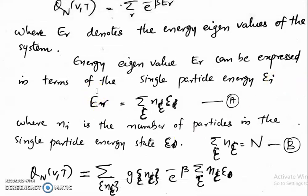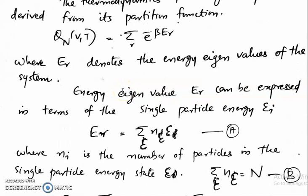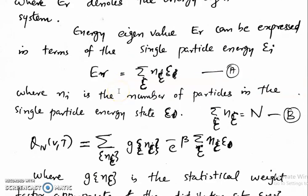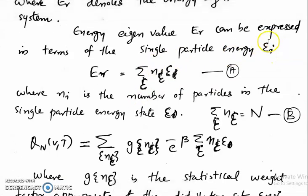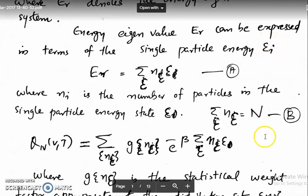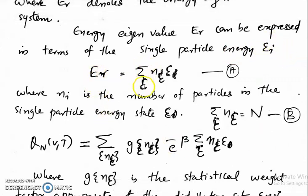Henceforth we will not be considering cells — only single particle levels. So we will be considering only single particle energy levels; the idea of cells is discarded. This is basically the single particle energy epsilon. E_r is equal to the summation over the single particle energy levels of n_epsilon times epsilon, where n_epsilon is the number of particles in each single particle level of energy epsilon.